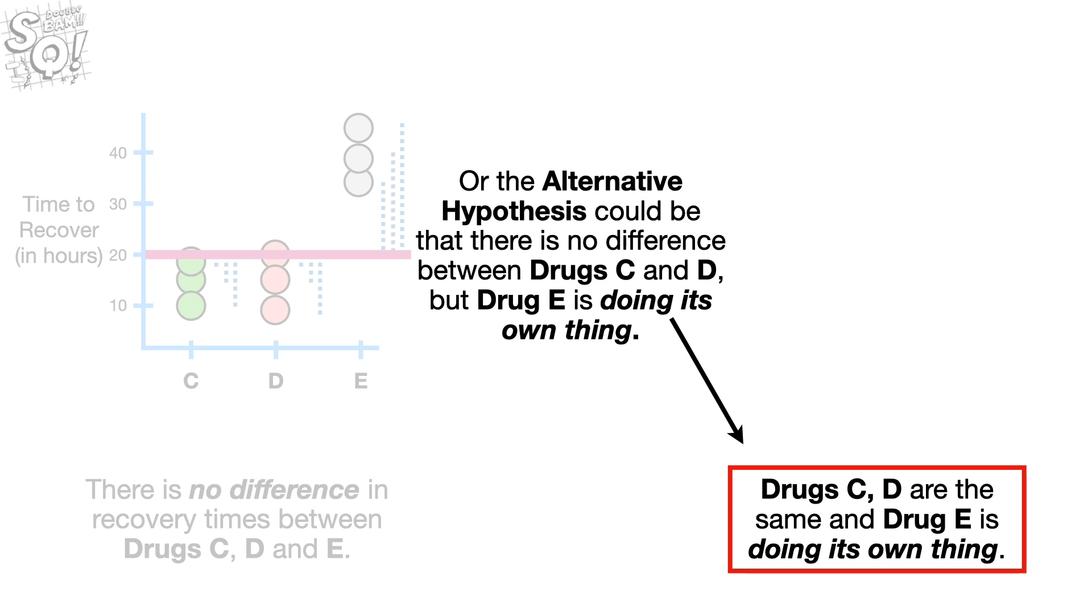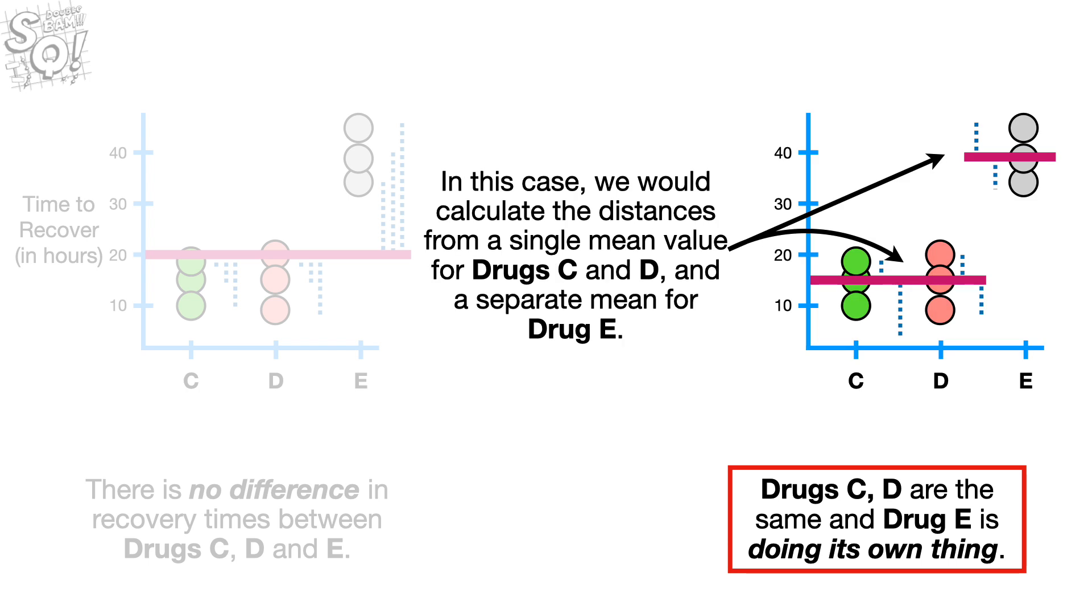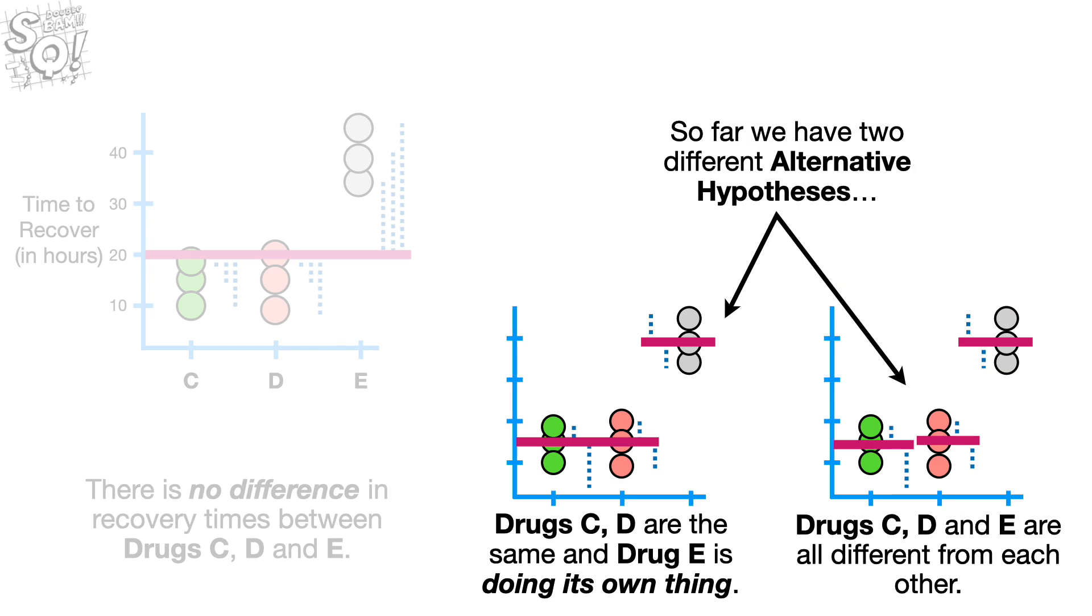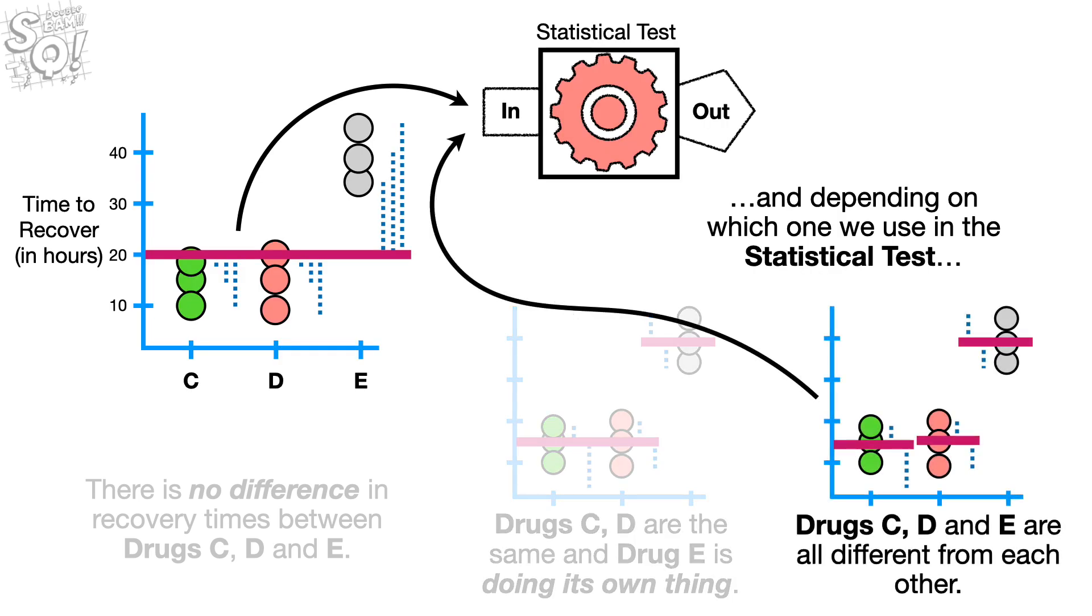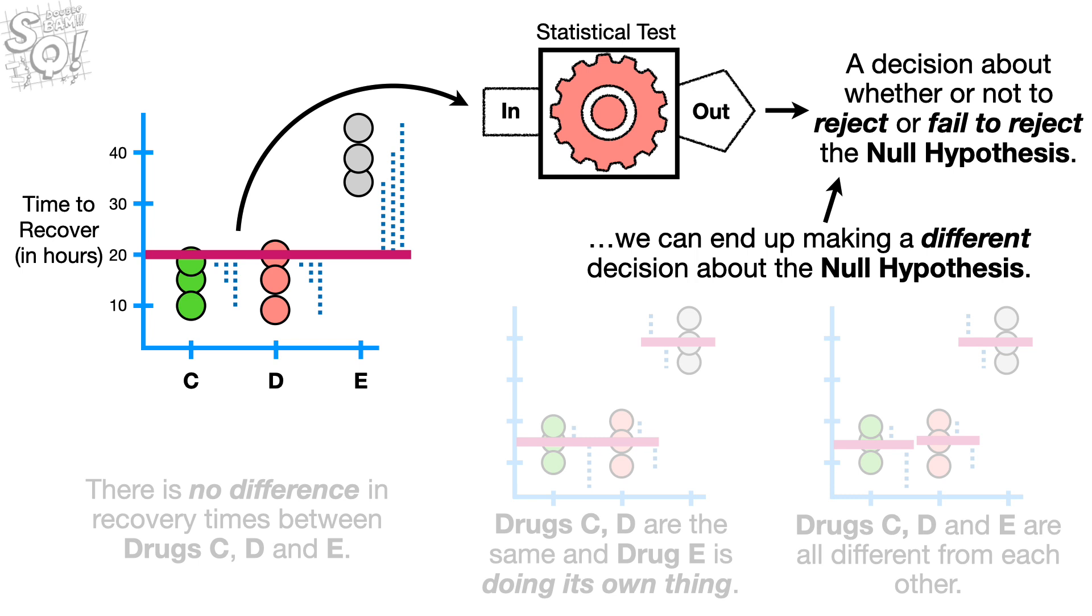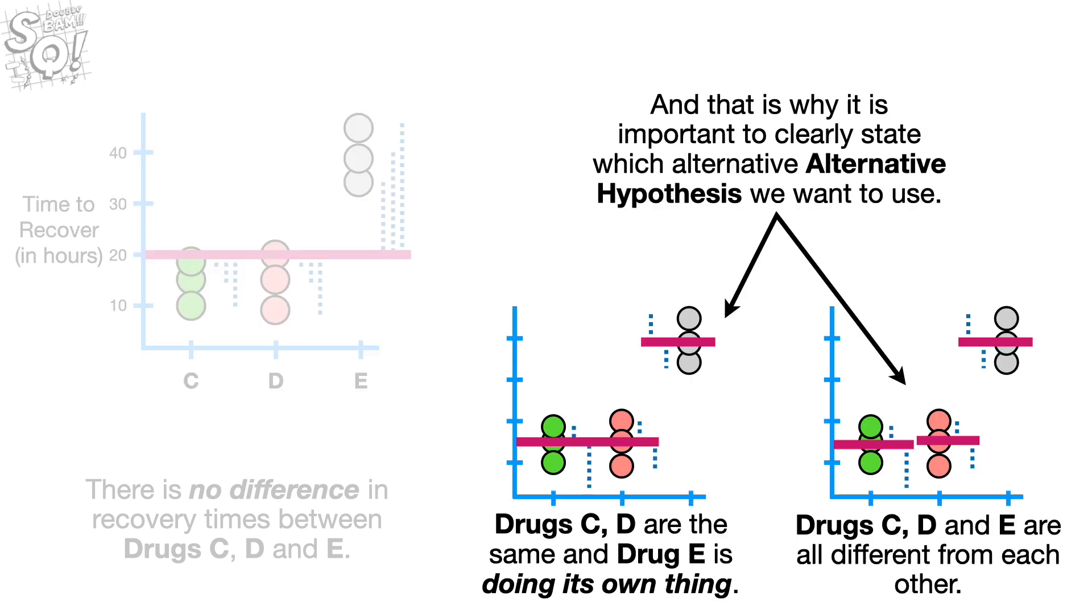Or, the alternative hypothesis could be that there is no difference between drug C and D, but drug E is doing its own thing. In this case, we would calculate the distances from a single mean value for drugs C and D, and a separate mean for drug E. So far, we have two different alternative hypotheses. And, depending on which one we use in the statistical test, we can end up making a different decision about the Null Hypothesis. And, that is why it is important to clearly state which alternative hypothesis we want to use.